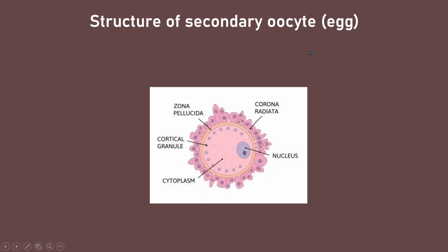The secondary oocyte consists of the corona radiata — the outer layer of the egg — followed by the zona pellucida as the second layer, then the plasma membrane. Inside the plasma membrane is the cytoplasm, which contains many cortical granules located near the plasma membrane, as well as the nucleus.